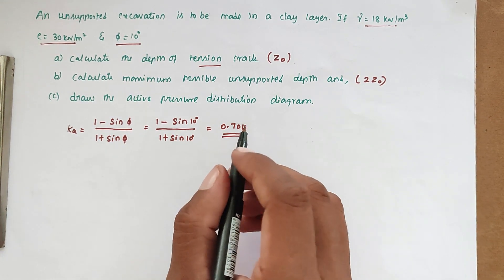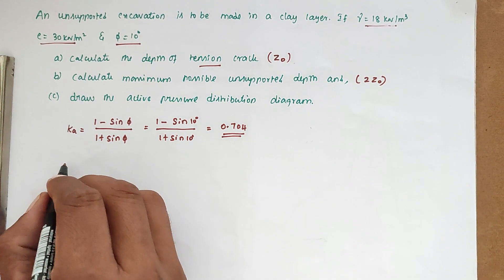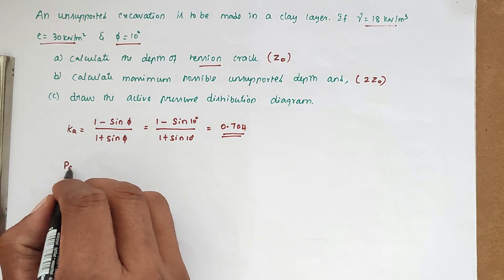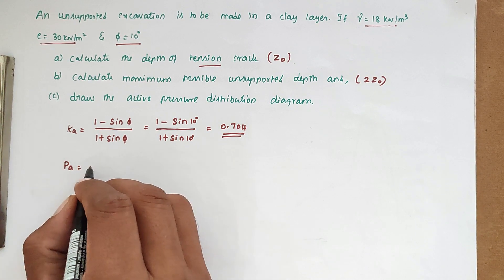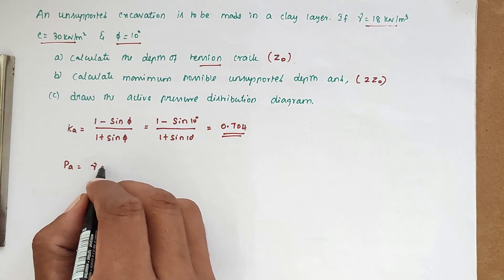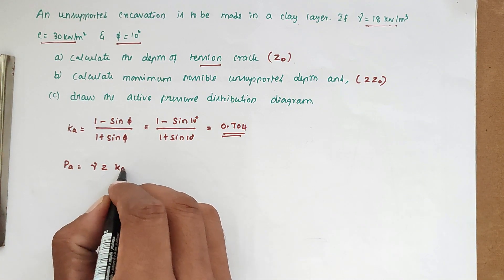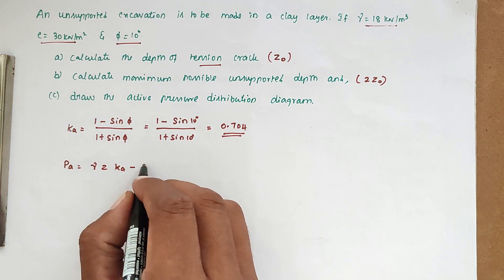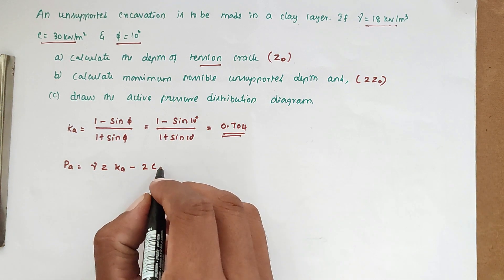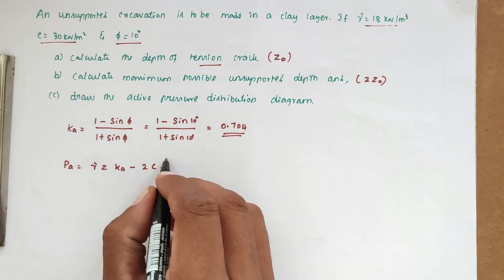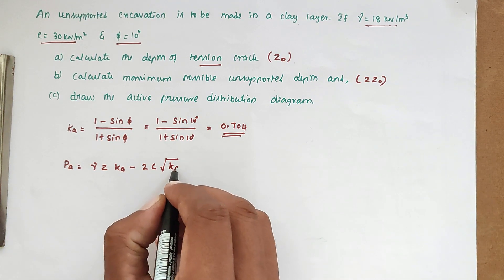We know the active earth pressure formula: Pa = gamma × z × Ka − 2c × √Ka.